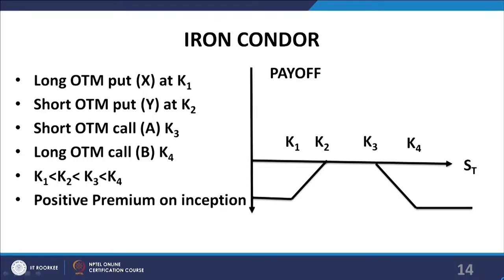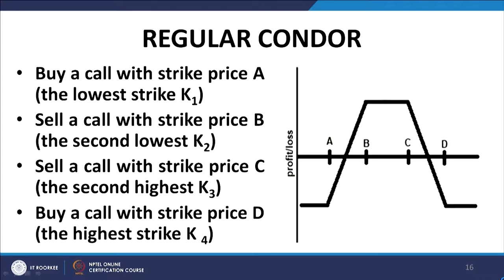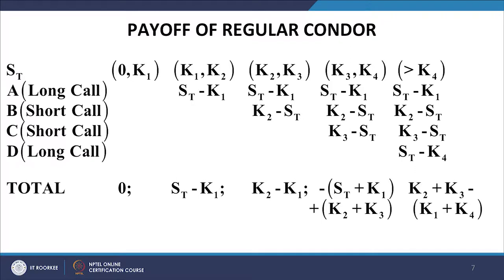These are some slides which cover the payoff of the iron condor, which I did not discuss earlier while talking about trading strategies. The information is there on the slide; it is pretty straightforward, pretty similar to what we have for the butterfly spread. Similarly, we have a regular condor. There are two types of condors. The regular condor consists of four calls — two long and two short: a long call at price K1, a long call at price K4, and short calls at prices K2 and K3, where K2 and K3 are sandwiched between K1 and K4. Between K2 and K3, both A and B will be exercised, and this is the payoff of the regular condor.